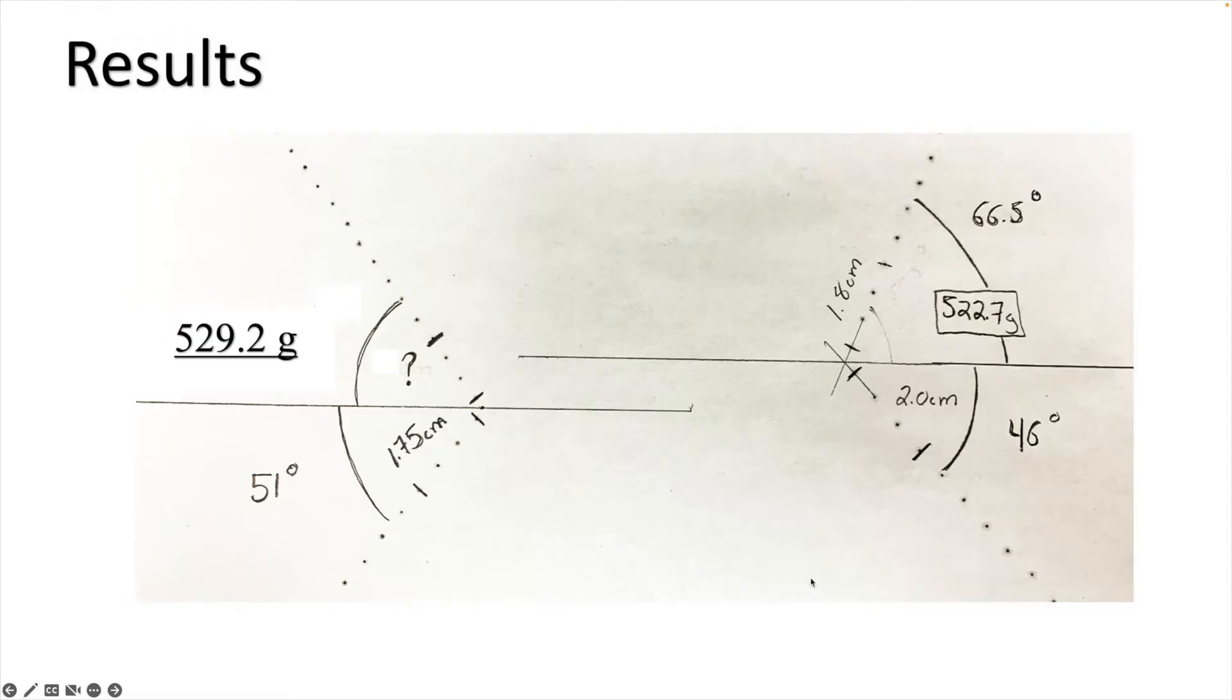Okay so now to look at the results from the experiment we can see these dots showing the collision between the two pucks. On the right hand side here it was the 522.7 gram mass it came in at an angle of 46 degrees and left at an angle of 66.5 degrees. We also can see that in three intervals of sparks it covered two centimeters on its way in and 1.8 centimeters on the way out.